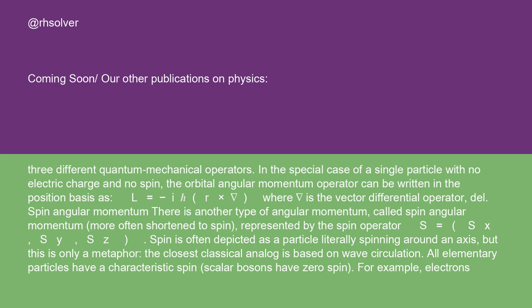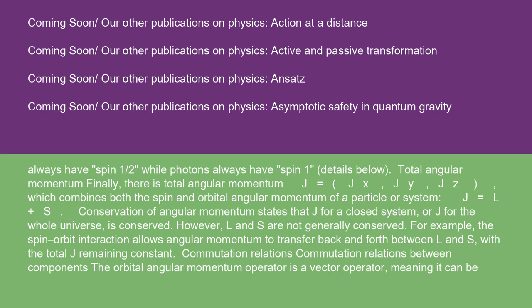There is another type of angular momentum called spin angular momentum, more often shortened to spin, represented by the spin operator S = (Sx, Sy, Sz). Spin is often depicted as a particle literally spinning around an axis, but this is only a metaphor; the closest classical analog is based on wave circulation. All elementary particles have a characteristic spin. Scalar bosons have zero spin. Electrons always have spin one-half, while photons always have spin one.